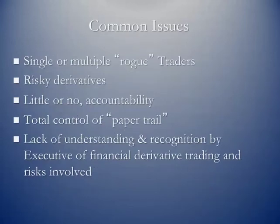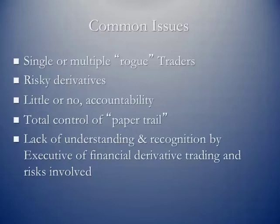Common issues throughout all of these — hopefully you've picked up on that in the case studies. They're really the single or multiple rogue traders. When we say rogue traders, we're talking about people who did things on their own, made decisions on their own. They were dealing in risky derivatives — not simply the underlying instruments. In some cases they were doing options, swaps, exotic options, and some other things. Little or no accountability — this is the big one.